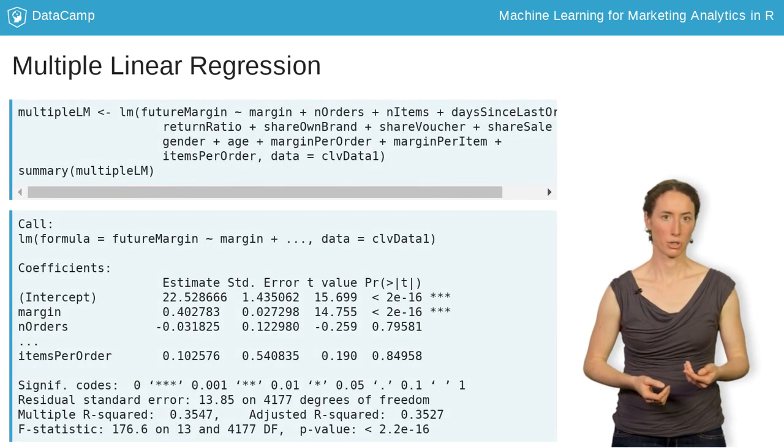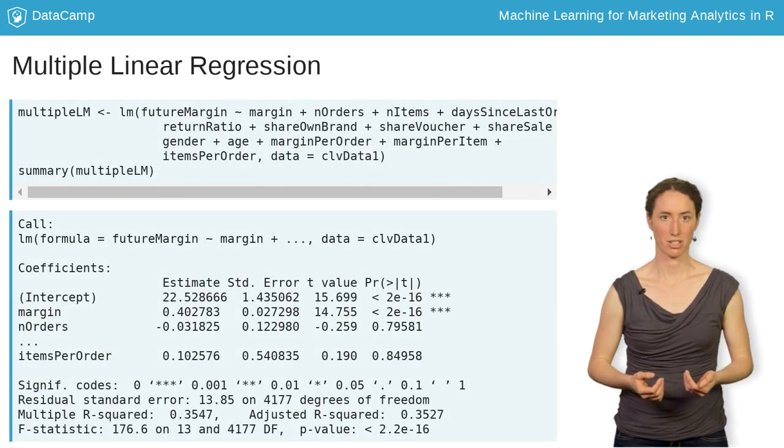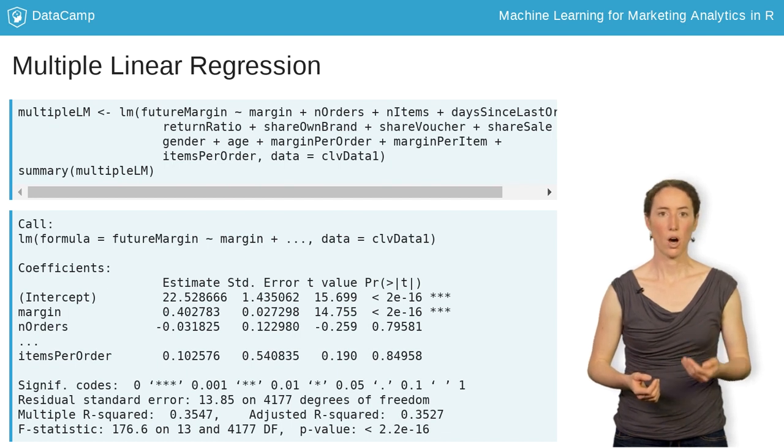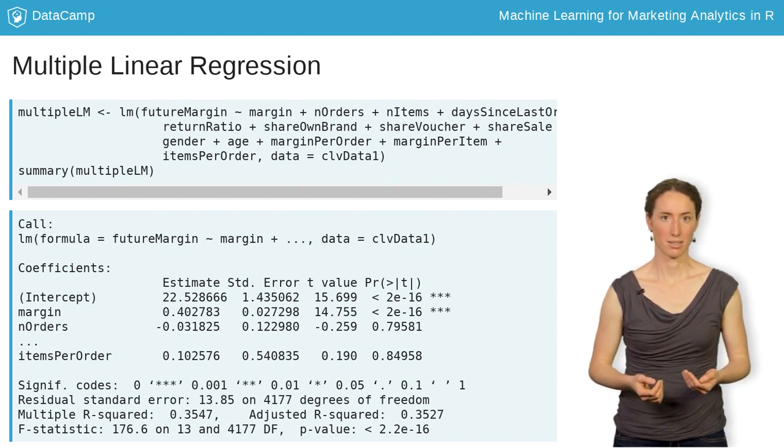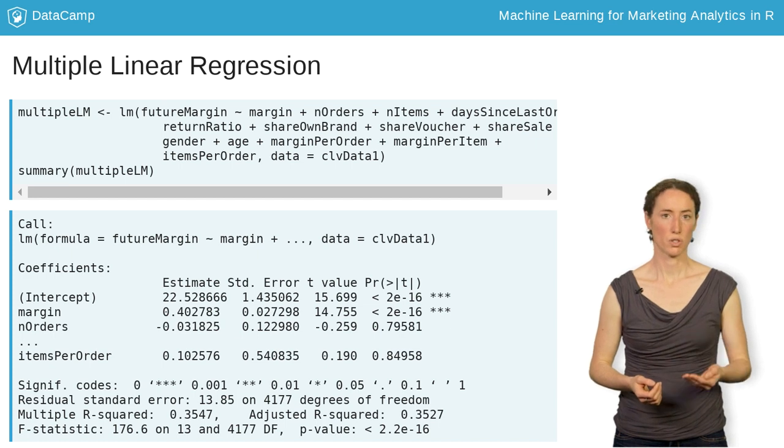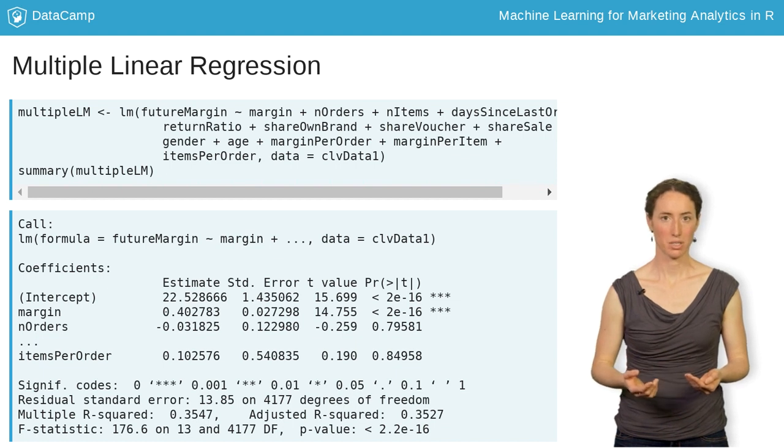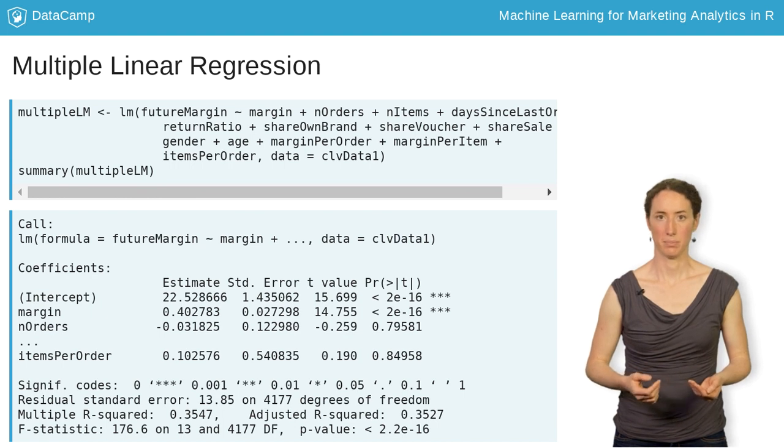Let's estimate a multiple regression model using the lm function, including all the variables in the dataset. Future margin is now modeled as a function of margin, n orders, n items, and so on. We save the model as multiple lm.